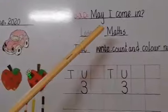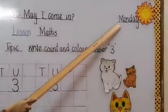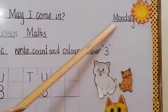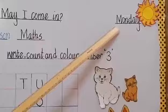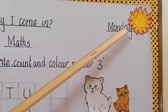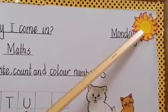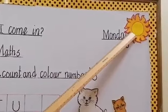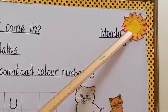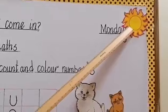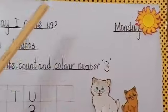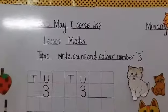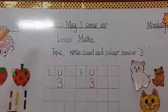Now tell me, what is the day today? Monday. What is the day today? Monday. And what is the weather outside? It's a sunny day. What is the weather outside? Sunny day. Is a sunny day hot or cold? It's a hot day.